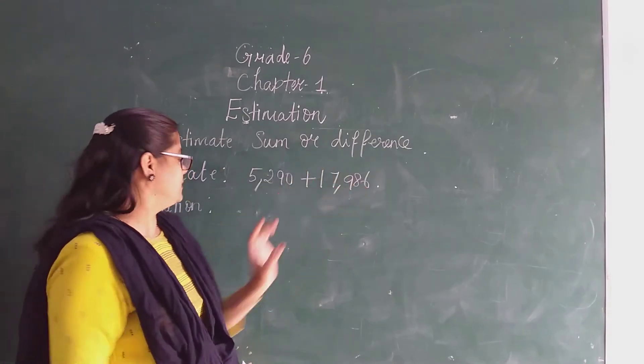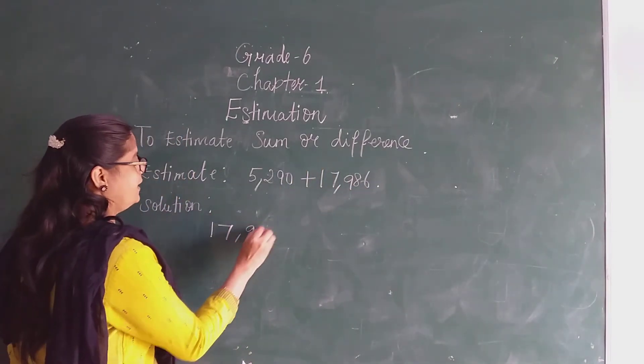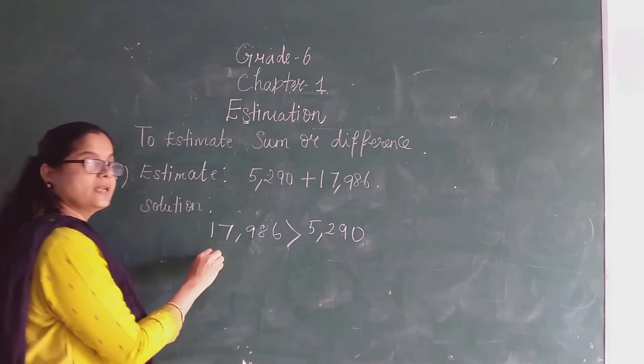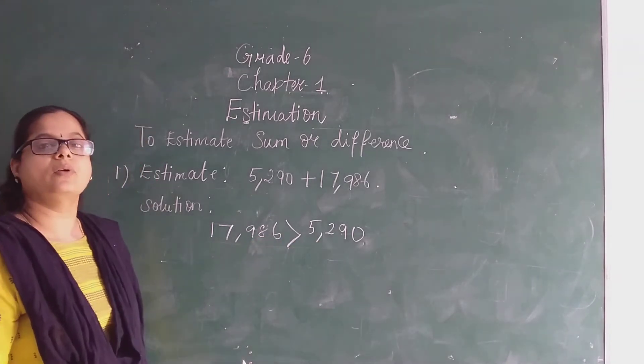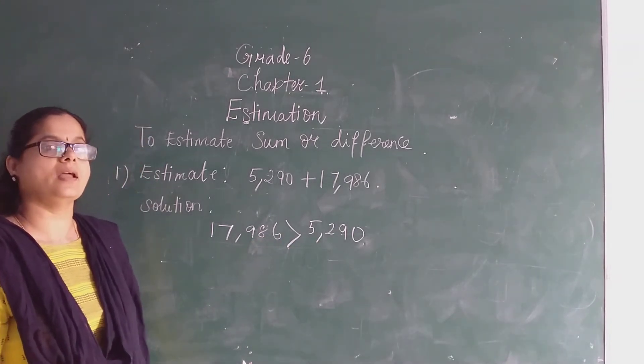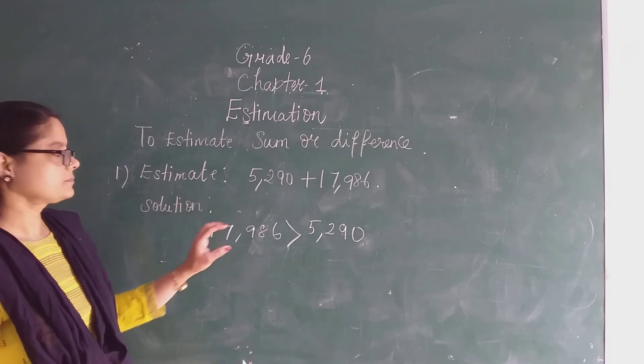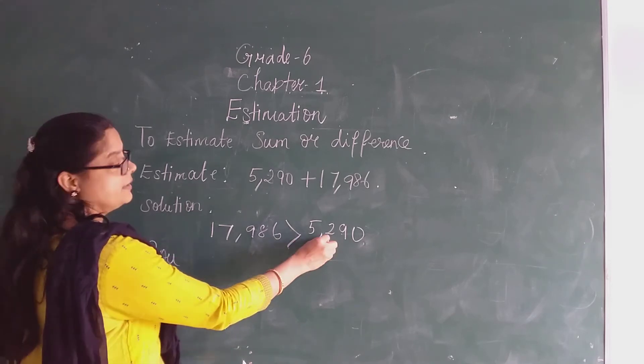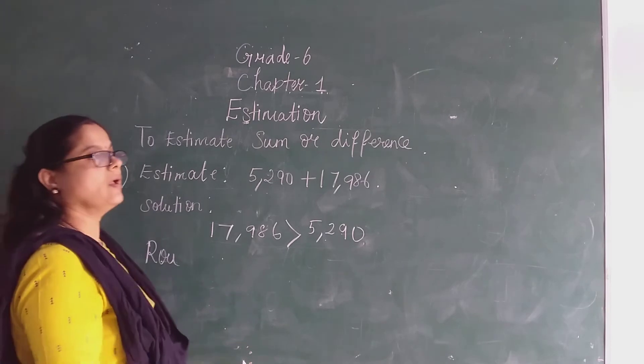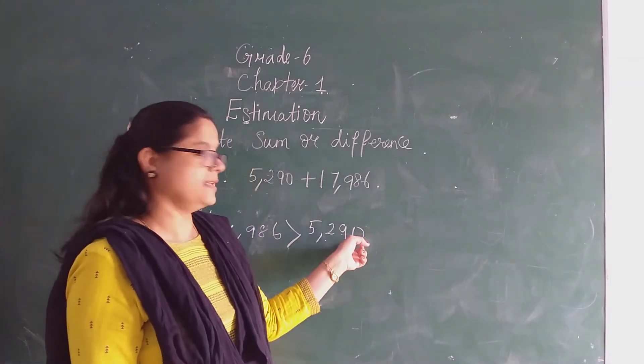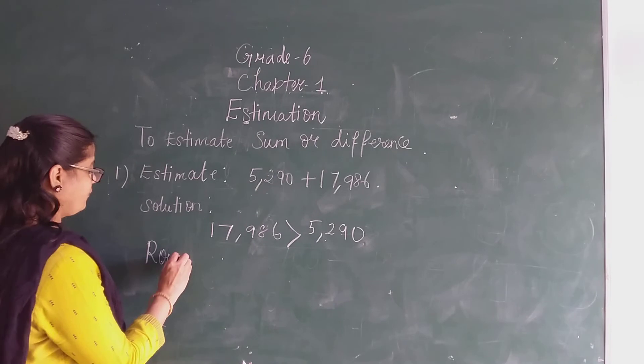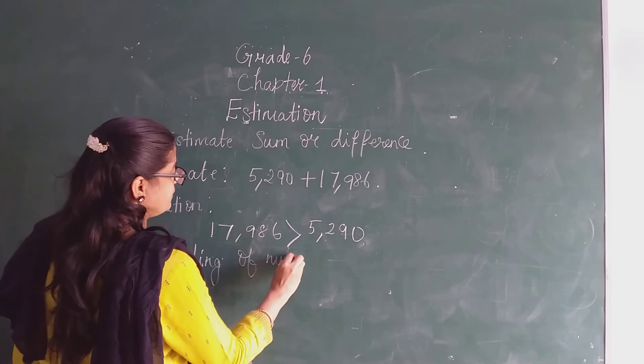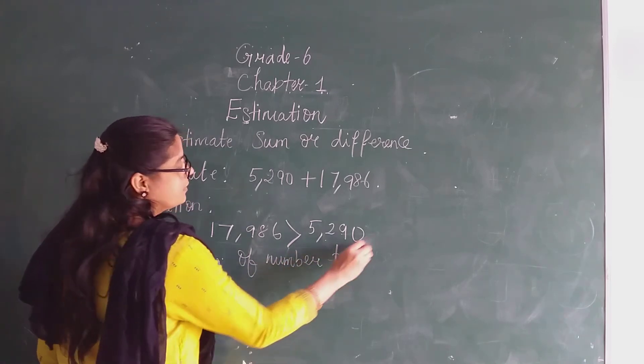So it is very greater. This 17,986 is greater than 5,290 because it's in the ten thousand range, this is in the thousand range. We can make it to thousand. We can round it off by thousand. Since we cannot take this number to ten thousand range, we will round it off to thousand. Rounding off numbers to thousand.